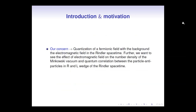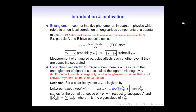Our goal in this work is to quantize a fermionic field with background electromagnetic field in Rindler spacetime, and further to see the effect of electromagnetic field on the number density of the Minkowski vacuum and the quantum correlation between particles and antiparticles in the right and left wedges of Rindler spacetime. Let us now see what entanglement is by taking an example. Entanglement refers to the non-local correlations among various components of a quantum system.